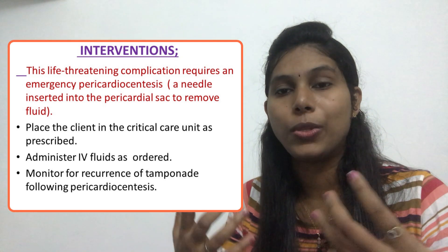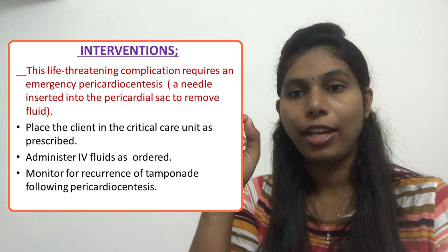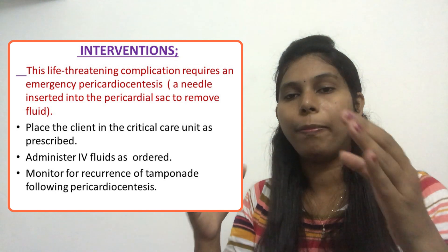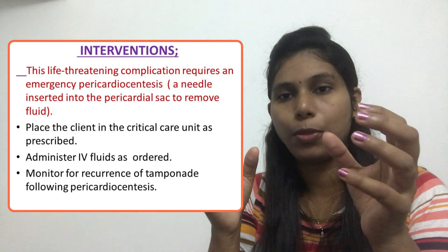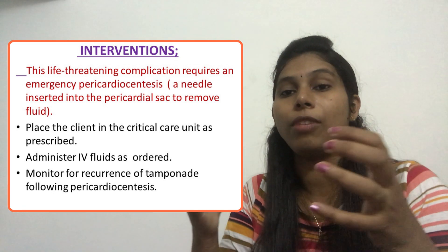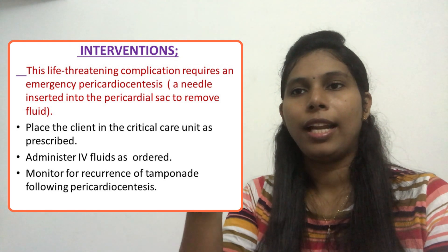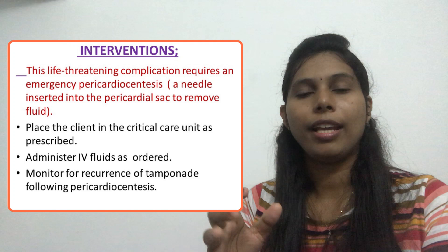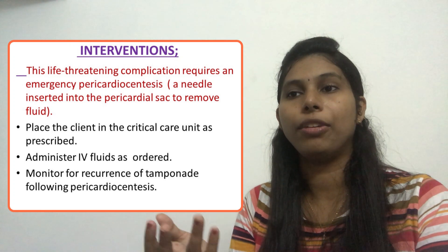Pericardiocentesis is the insertion of a needle into the pericardial sac to remove the excess fluid. Once the fluid is removed, the pericardial layer will decompress and the heart will get enough space to contract properly. Other interventions include placing the client in a critical care unit as prescribed, administering IV fluids as ordered, and monitoring for recurrence of tamponade following pericardiocentesis.